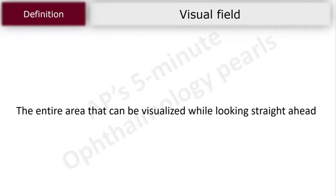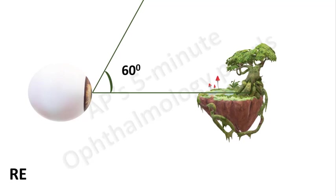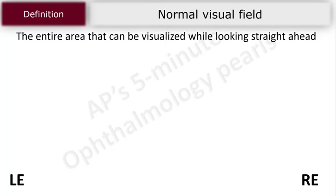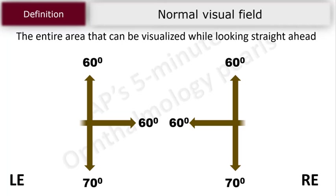The visual field can be defined as the entire area that can be visualized while looking straight ahead. What is the extent of the visual field? It extends 60 degrees superiorly, 60 degrees nasally, 70 degrees inferiorly and about 100 degrees temporally.